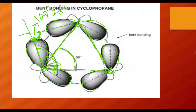However, the angle between the internuclear distances in the ring is 60°. So there are two opposing factors: the internuclear geometry tries to keep the angle at 60°, while the orbital mixing tries to keep it at 109.5°. There is a clash between the two.